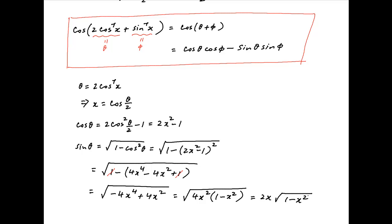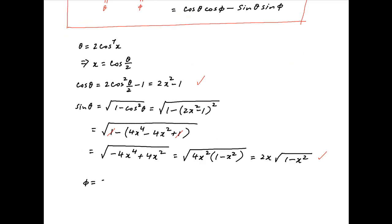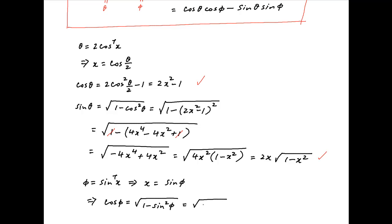Therefore sin theta simplifies to 2x times square root of 1 minus x squared. Now we have assumed that phi is equal to sin inverse x. Therefore x is equal to sin phi, and therefore cos phi, which is equal to square root of 1 minus sin squared phi, is equal to square root of 1 minus x squared.